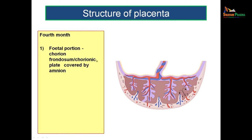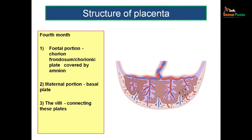During the 4th month of the intrauterine period, this is how it looks. The fetal portion is identified by looking at where the umbilical cord is attached. The surface to which the umbilical cord is attached is known as the fetal portion of the placenta, and it is covered by the amnion. The fetal portion is otherwise known as chorion frondosum. The maternal portion of the placenta is known as the basal plate. You have the chorionic plate on the fetal part and the basal plate on the maternal part.